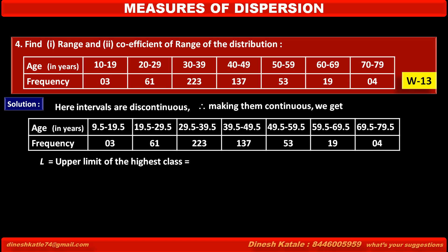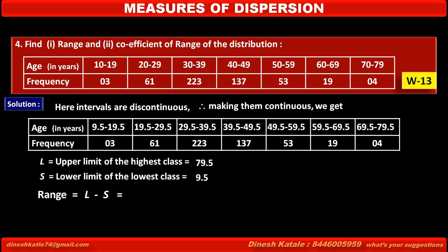Therefore, L is equal to the upper limit of the highest class, which is equal to 79.5. S is equal to the lower limit of the lowest class, which is equal to 9.5. Therefore, range is equal to L minus S, which equals 79.5 minus 9.5, which is equal to 70. And L plus S is equal to 79.5 plus 9.5, which is equal to 89.